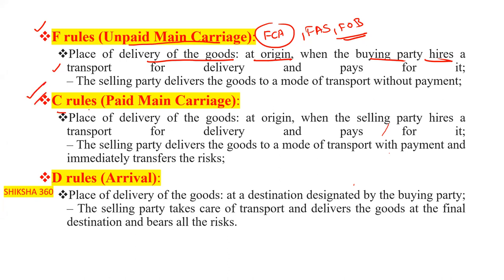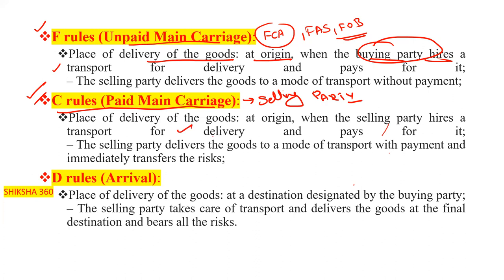The C rules represent paid main carriage. The place of delivery is also at the origin, but here the selling party hires a transport for delivery and pays for it. The seller delivers the goods to a mode of transport with payment and immediately transfers the risk to the buyer.